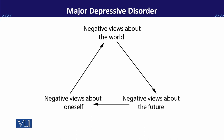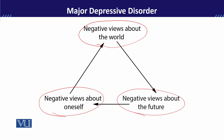The three automatic negative thoughts are about the world, oneself, and the future — this is called the cognitive triad. Negative view about oneself: 'I am a failure, I am a worthless person.' Negative view about the world: 'The world is an unfair place and everything happening in this world is unfair.' Negative view about the future: 'Nothing will happen to me.' This kind of negative thinking regarding the future, the world, and the self leads to depression.